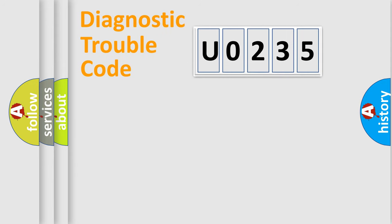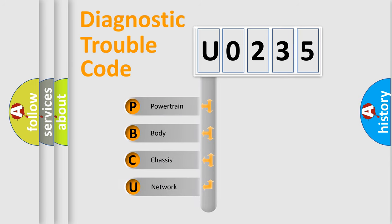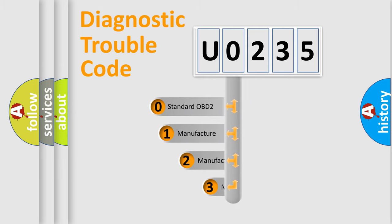Let's do this. First, let's look at the history of diagnostic fault code composition according to the OBD-II protocol, which is unified for all automakers since 2000. We divide the electric system of an automobile into four basic units: Powertrain, Body, Chassis, and Network. This distribution is defined in the first character of the code.